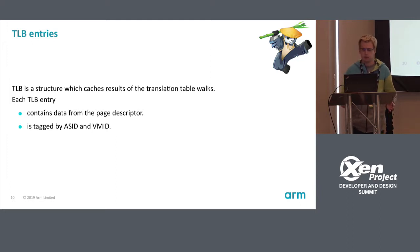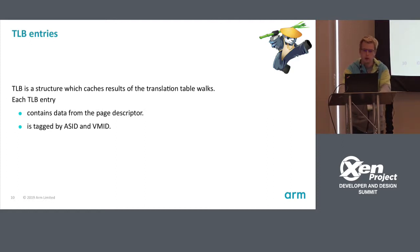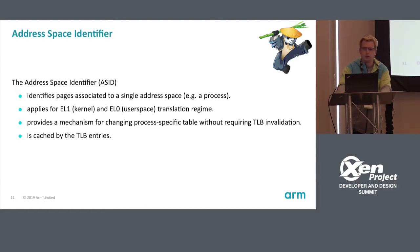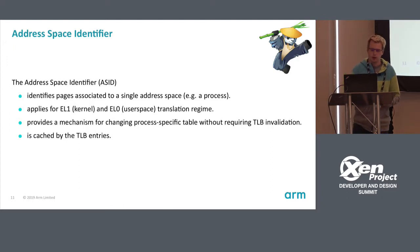Using page tables is one thing, but you also need to cache them because walking page tables every time would be slow. A TLB entry contains data from the page descriptor and is tagged by ASID and VMID. An ASID — Address Space Identifier — identifies pages associated with a single address space. It applies to EL1 for the kernel and EL0 for user space, and allows easy switching between page tables without having to invalidate the TLB.